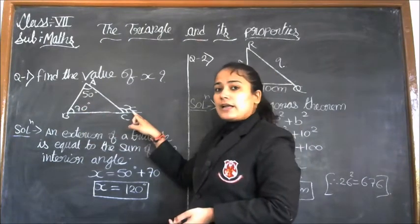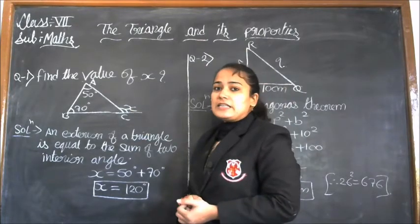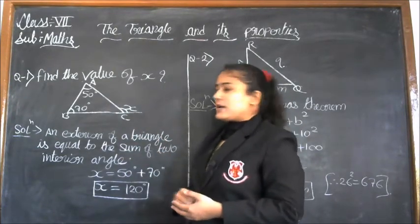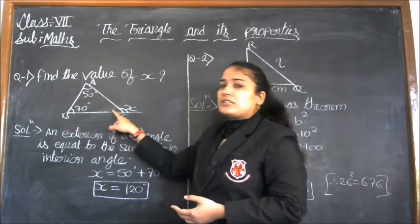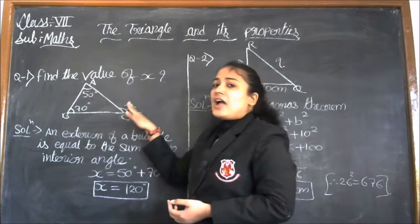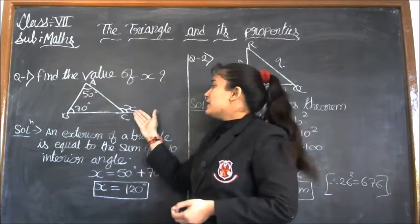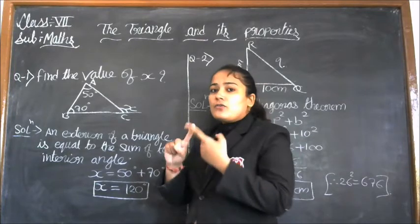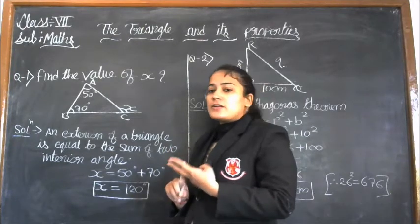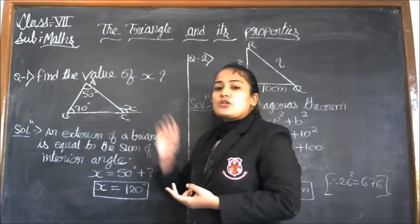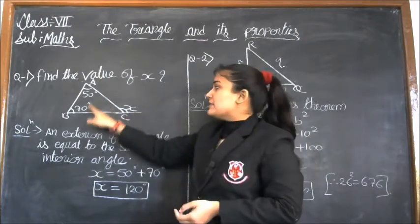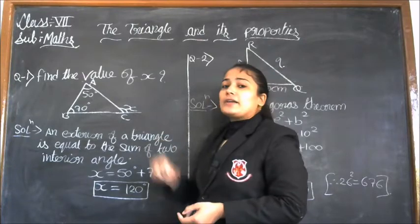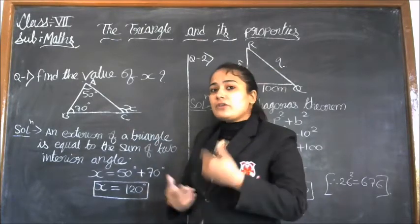What about this angle x? Angles which are inside the triangle are known as interior angles — angles 1, 2, and 3 are the interior angles. The angle which is outside the triangle is known as the exterior angle. So there are two types of angles in a triangle: interior angle and exterior angle.